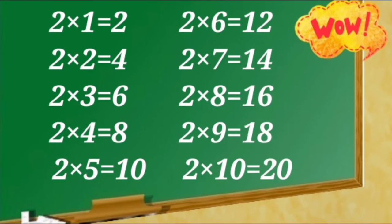2 ones are 2, 2 twos are 4, 2 threes are 6, 2 fours are 8, 2 fives are 10, 2 sixes are 12, 2 sevens are 14, 2 eights are 16, 2 nines are 18, 2 tens are 20.